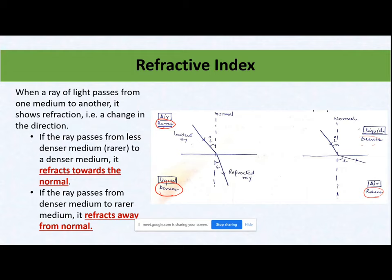In reflection, the direction of travel continues the same — it does not change. In refraction, the direction changes. Two cases are possible: first, where this is the path the light is following but it was supposed to follow the dotted line path — it is moving towards the normal. Second case — it was supposed to follow that path but it is moving away from the normal. This dotted line is my normal.